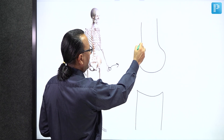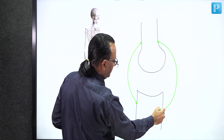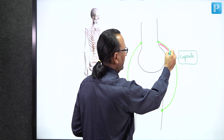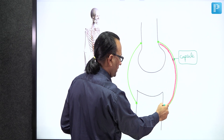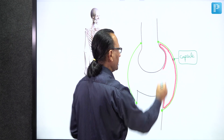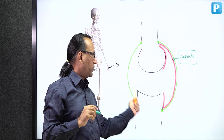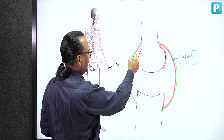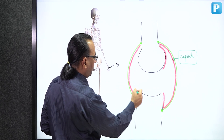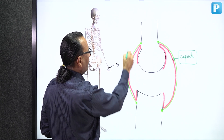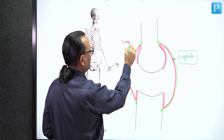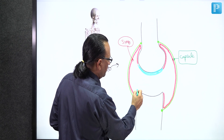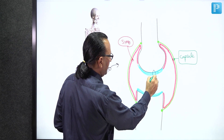The synovial joint is enclosed by a capsule made of collagen fibers connecting the two bones. The capsule is lined on the inner side by synovial membrane, which also lines the bones but does not encroach upon the articular surfaces. The articular surfaces are covered by articular cartilage, which lines the ends of bones to keep them smooth for movement at the synovial joint.